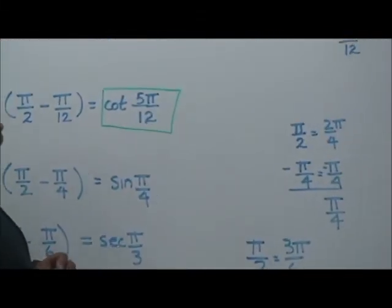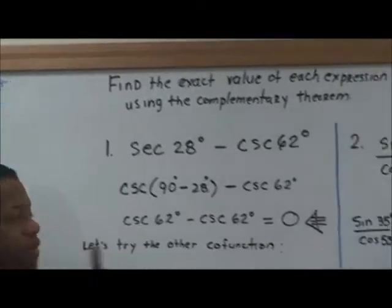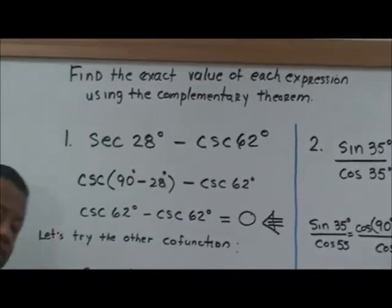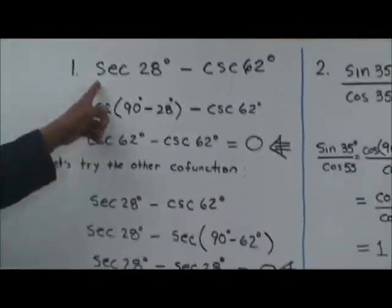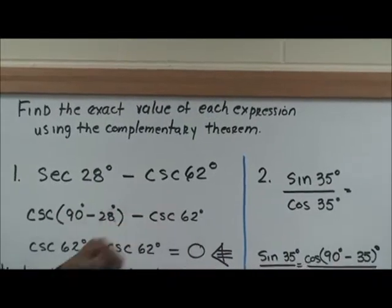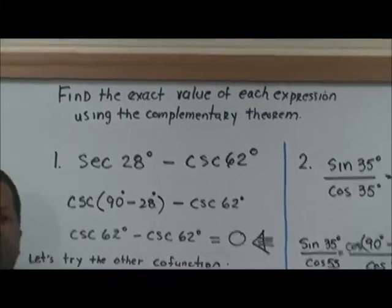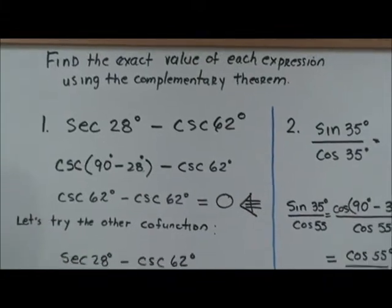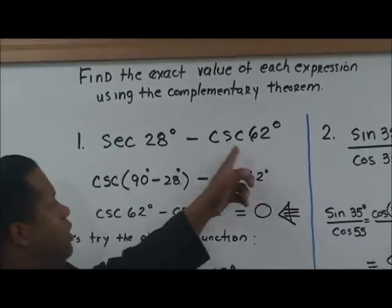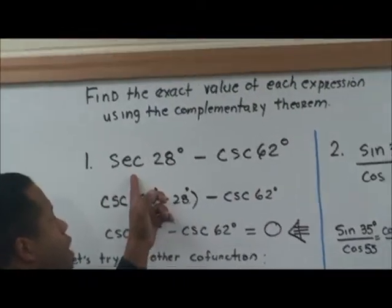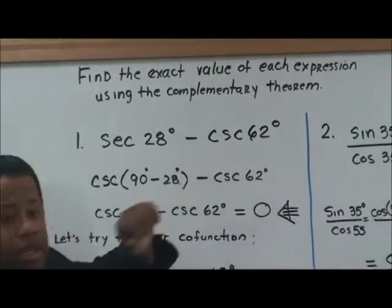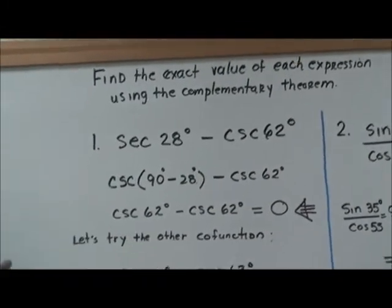Now let's go over here and talk about finding the exact value of each expression using the complementary theorem. Now, secant 28 degrees minus cosecant 62 degrees. Still, you want to use those co-function conversions there. As you see right here, you can use any one of these. You can convert this to be cosecant or you can convert this to be secant, right? Of course, I'll show you that.